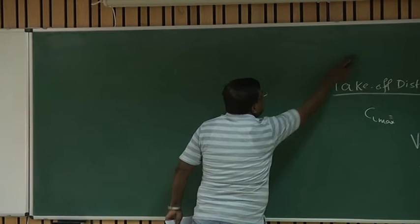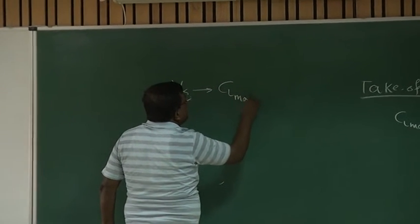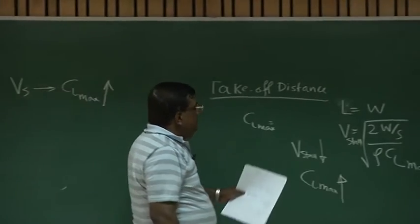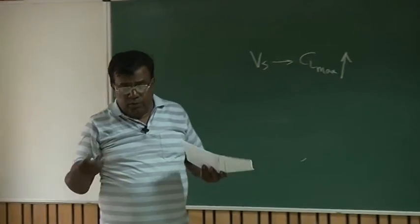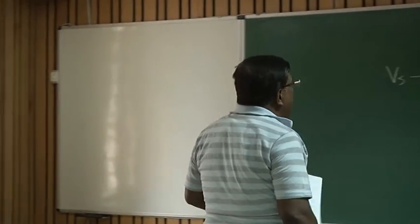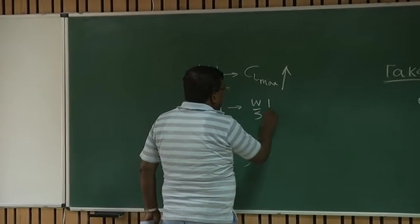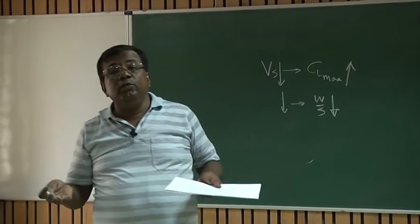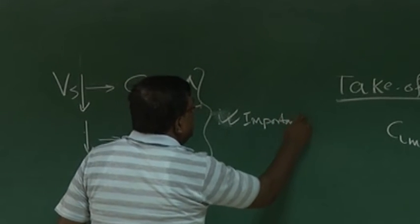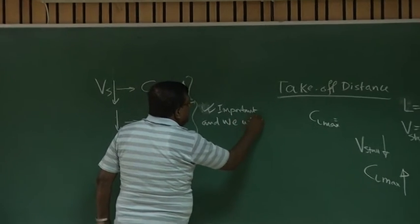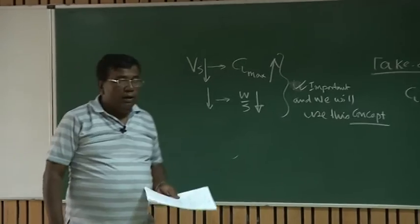If we want short takeoff distance, then reduce this V stall. To reduce V stall, what I could do for a given wing loading and altitude, I have the option of increasing C_L max. Now the question comes, how can I decrease V stall? That is the question. To decrease V stall, one thing we have realized, I have to increase C_L max. Second thing, if I want to decrease V stall, this is another very important parameter sitting here: wing loading. If I want to decrease V stall, I have to reduce wing loading. And reduction of wing loading means what? If you want to reduce this like C_L max, reduce V stall further, I have to reduce the wing loading. Reducing wing loading means I have to increase the wing area.